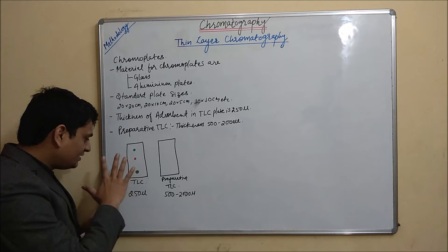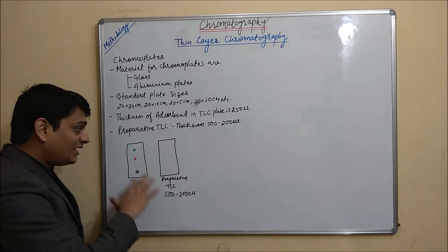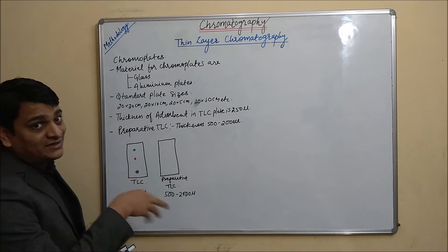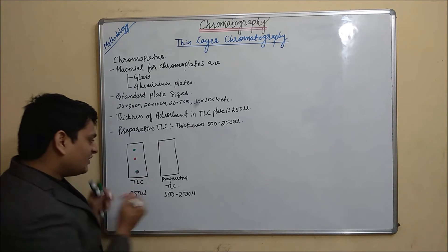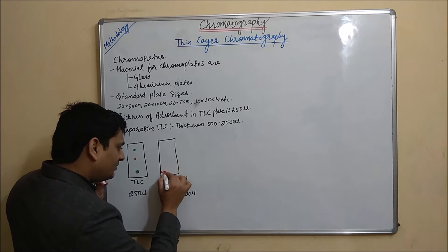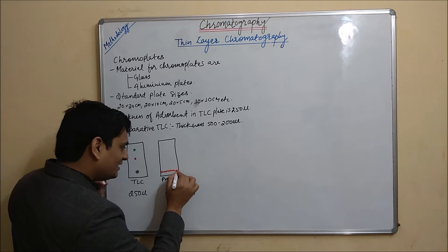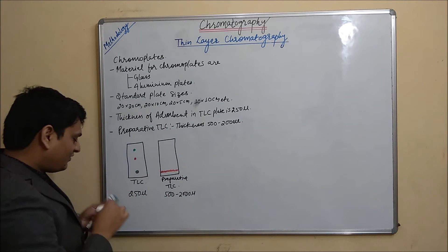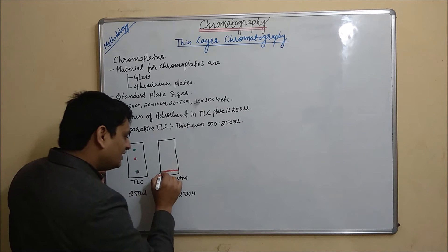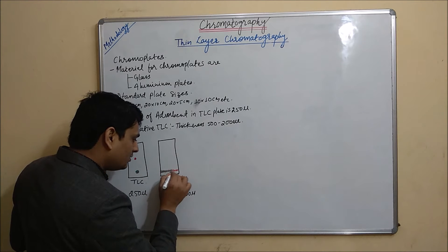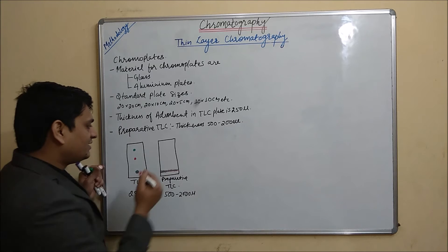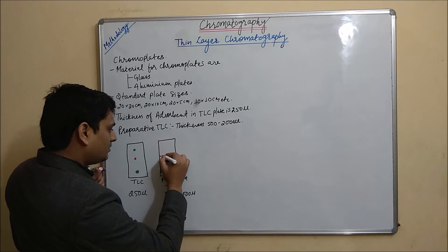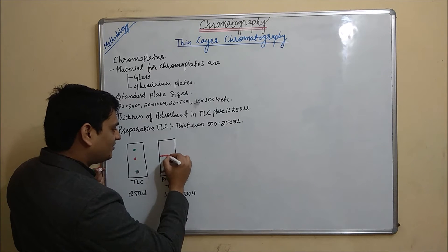In preparative TLC, we are putting our sample as a large band as compared to spots. Our sample will be put like this in the form of a band from start to end. And it will be separated in the form of a complete band.